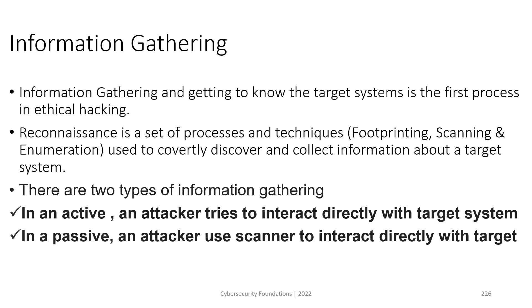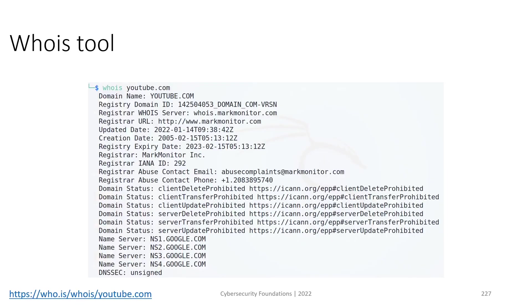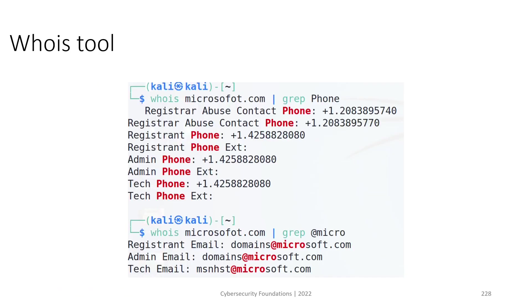Information gathering is a technique used to collect data about a specific company for use in social engineering attacks. One example is the WHOIS tool, available on Linux and Kali Linux. By running WHOIS against a domain — for example, youtube.com — you can retrieve valuable information such as who registered the domain, the technical contact responsible for managing it, and the administrator's and technical team's phone numbers.